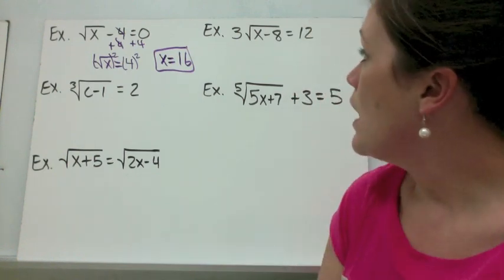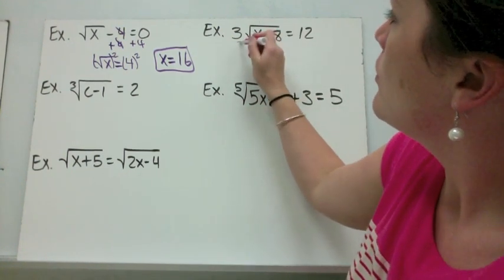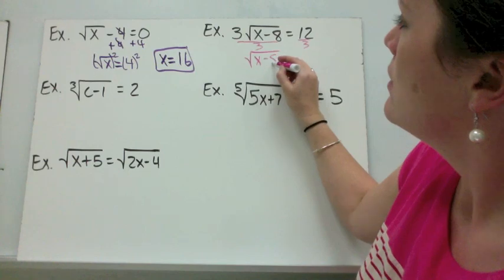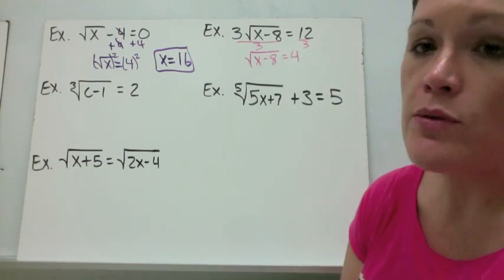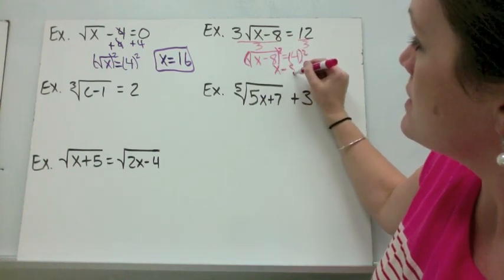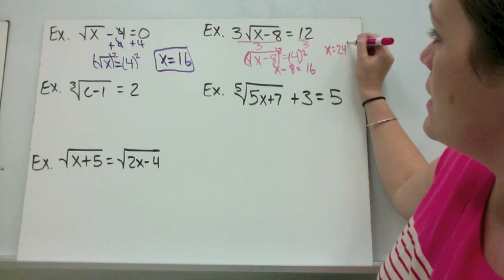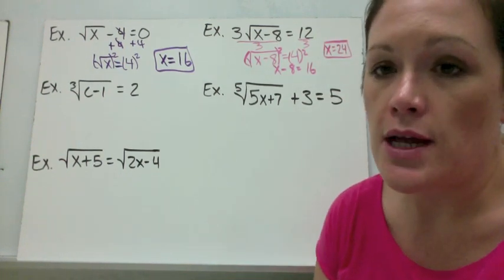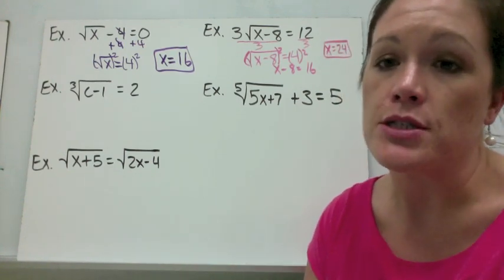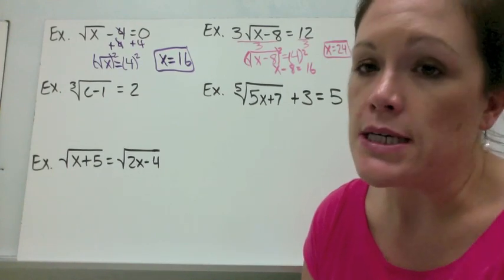Example 2: 3 times the square root of x minus 8 equals 12. To get the radical by itself, we divide both sides by 3, giving us √(x - 8) = 4. Then we square both sides to get x minus 8 equals 16. Adding 8 to both sides gives x equals 24. You can plug your answer back in and check — this is a good habit on a test when you have spare time.